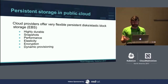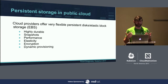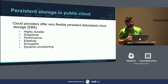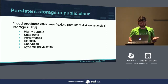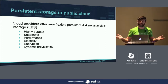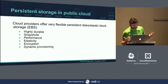We all know persistent disks provided by our cloud providers. They're extremely durable and it's practically become the default way of obtaining persistent storage in the public cloud. They're highly durable, there's very convenient snapshotting functionality, they're fairly performant, and there are quite a few options to get the performance you actually desire. They're elastic on both Google and AWS, so you can dynamically scale them, and they provide encryption and dynamic provisioning.